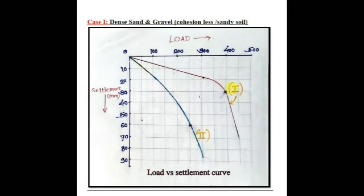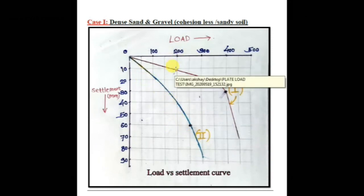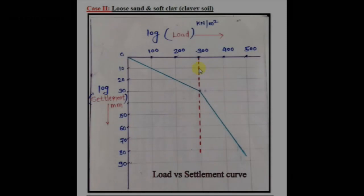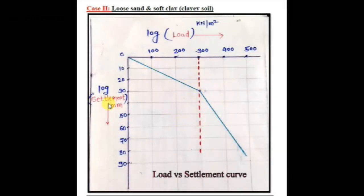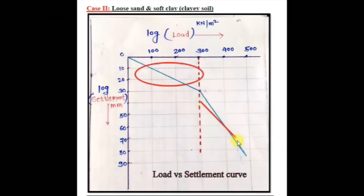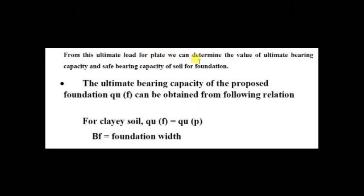In dense soil, sudden failure is observed and hence the ultimate capacity of the plate is clearly known. But in loose soil it is difficult to find the failure point due to progressive settlement. To obtain the proper failure point we use a log-log scale on both axes. The ultimate load for the plate is indicated by a break on the log-log plot. The graph is linear at the start then changes slope, and the load corresponding to the breaking point is the ultimate bearing capacity of the plate.